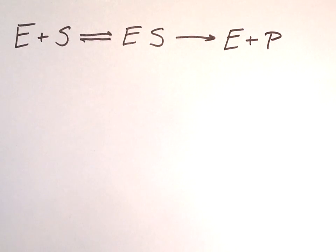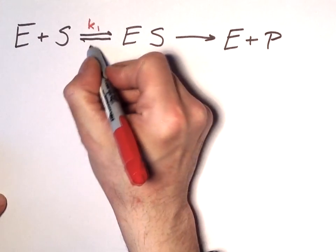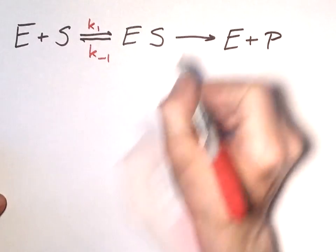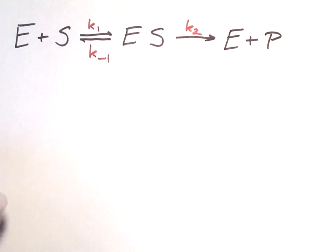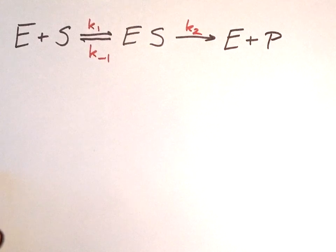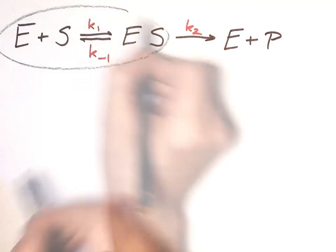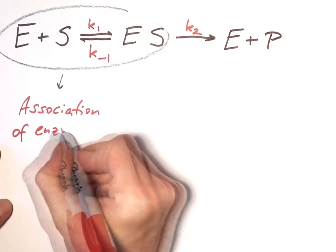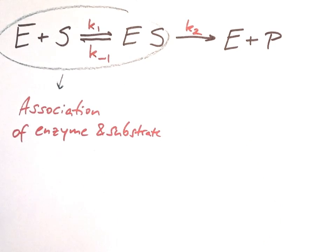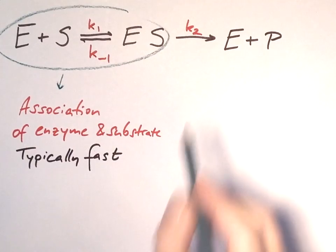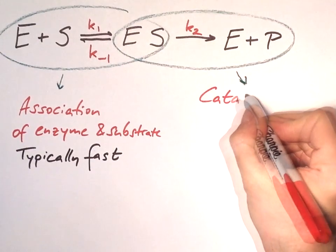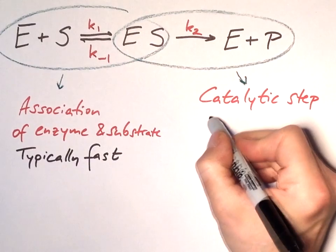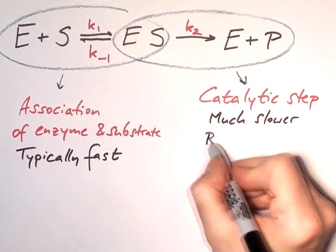The first step is reversible, with rate constants k1 and k-1. The second step is, for simplicity, considered irreversible, with a rate constant k2. At least at the beginning, where we measure V0, there is too little product around, so the reverse reaction happens at a negligible rate. The first step is simple binding or association of enzyme and substrate, rather like drug and receptor, and is typically very fast. The second step is the actual catalysis, and is much slower. This is typically the rate-limiting step of an enzymatic reaction.